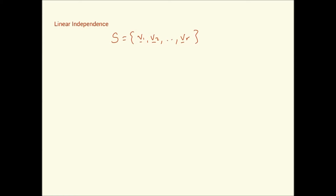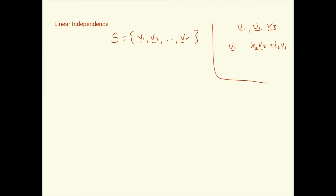In other words, for all these vectors, none of them can be expressed as a linear combination of the others. For instance, if our set is {v1, v2, v3}, then v1 cannot be expressed as k2·v2 + k3·v3. Similarly, v2 and v3 also cannot be expressed as a linear combination of the remaining vectors.